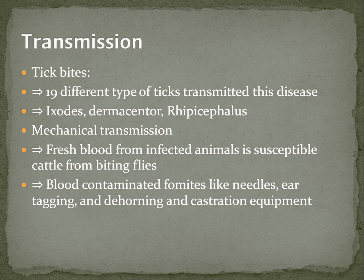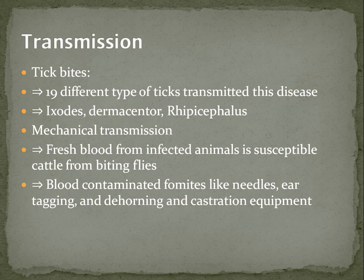To talk about transmission, it starts with tick bites. There are 19 different types of ticks that transmit this disease; the most common are Ixodid ticks, Dermacentor, and Rhipicephalus species. Mechanical transmission also occurs from fresh blood from an infected animal to susceptible cattle via biting flies, and blood-contaminated fomites like needles, ear tagging, dehorning, and castration equipment.